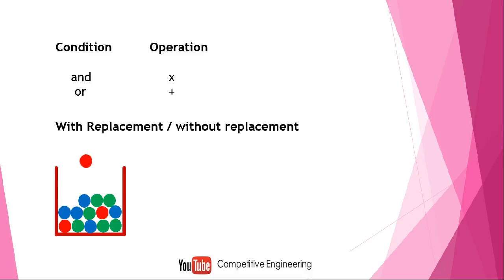Without replacement is the reverse: I take the red ball and without putting it back, I take another ball — blue or green. The peculiarity of without replacement is that the total number of chances reduces. When I take the red ball I have 14 chances, but when I go to take the green ball next, there are only 13 chances because only 13 balls remain in the basket.